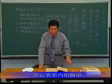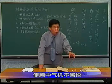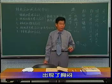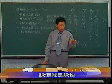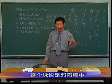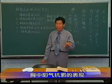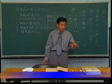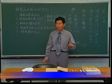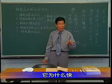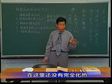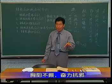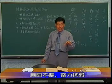因为表邪距胸是最近的，表邪内陷胸中，使胸中气机不畅。那么这种脉促就是脉快，脉快是邪陷胸中，胸中阳气奋力抗邪的一种表现。他为什么快啊？在这里还没有完全化热，就是因为胸阳不足，胸阳不振，奋力抗邪，他就以这种增快心率的方式，勉强抗邪的一种表现。